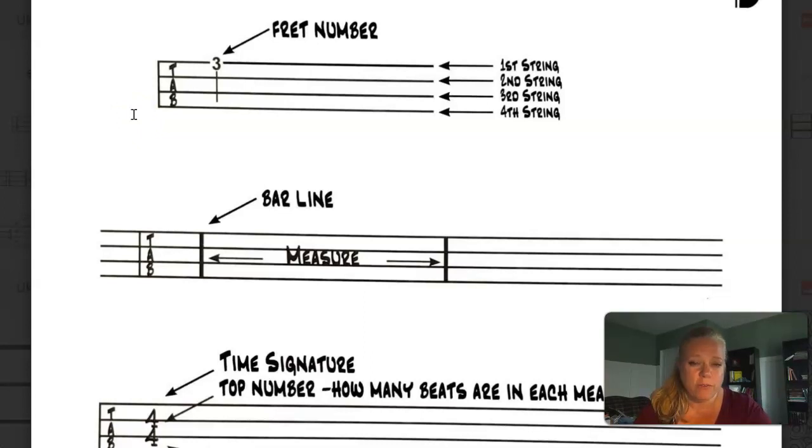Notice also where the first string is. It's as if you were taking your instrument and putting it like this with your strings and you're laying it down flat on the paper. That means that the number one string would be at the top of the tablature and the number four would be at the bottom.